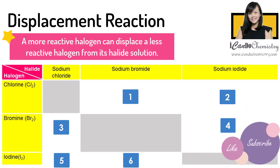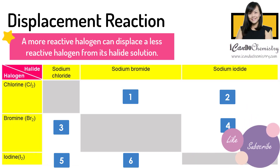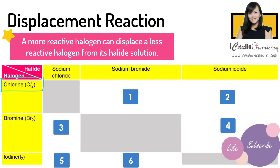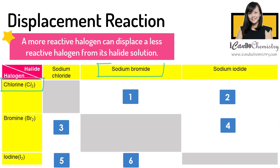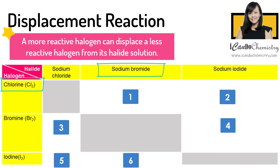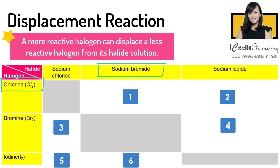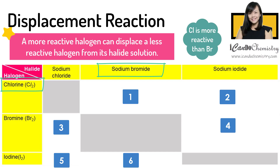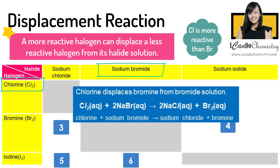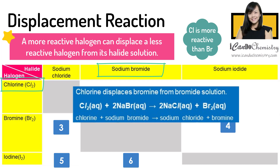Scenario one: we add aqueous chlorine to bromide solution. What will happen and what will we observe? We know that the reactivity of halogens decreases down the group. Chlorine is more reactive than bromine, hence chlorine will be able to displace bromine from bromide solution.